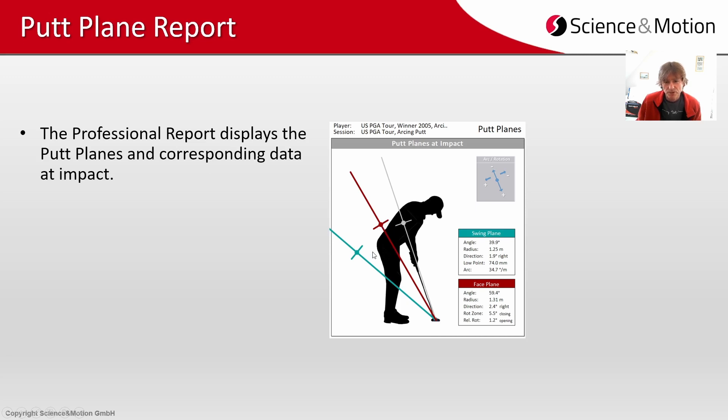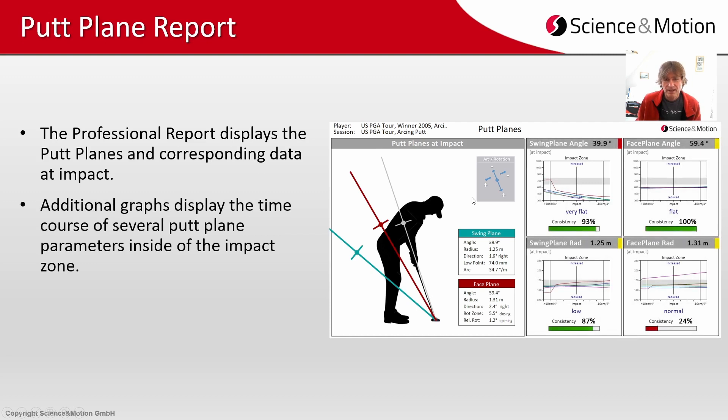In blue you see the swing plane and the center of the swing plane, and in gray you see the shaft plane. This data is all relative to impact and we show additional graphs for the time course of several putt plane parameters inside of the impact zone, for example angles or radius.